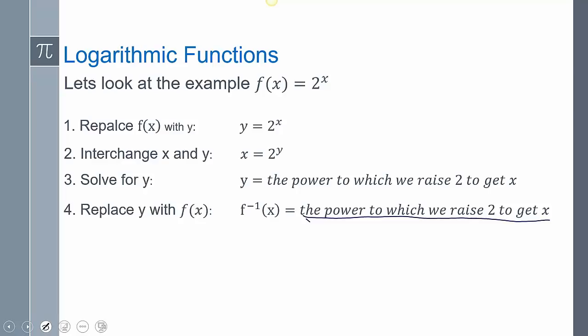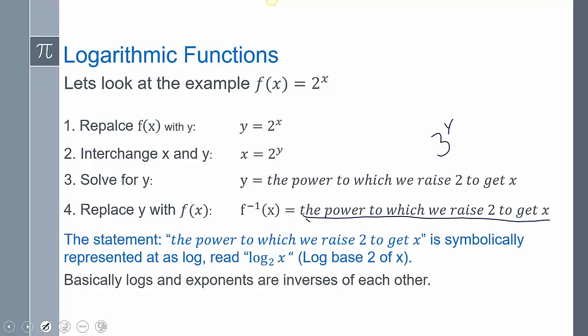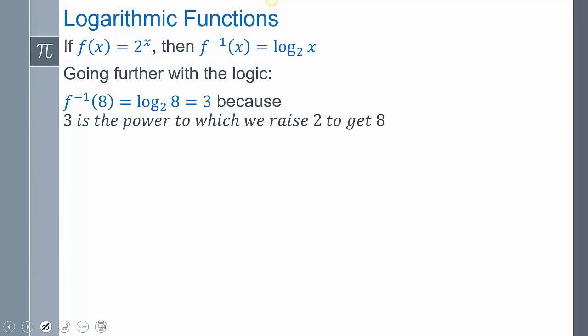This statement is really long to explain, so instead of saying 'Y is the power to which we raise 2 to get X' — or if this were base 3, 'the power to which we raise 3 to get X' — we are going to use the phrase logarithm. So the power to which we raise 2 to get X is symbolically written as log base 2 of X. Logarithms and exponents are inverses of each other, so log base 2 is used because the base is 2.